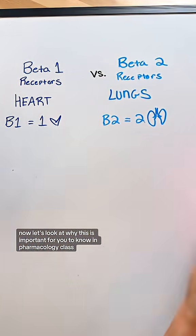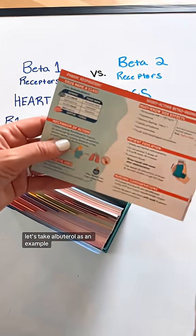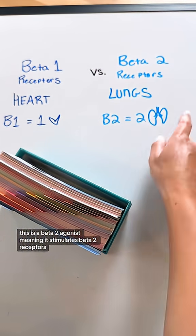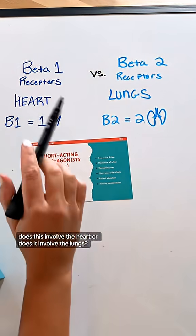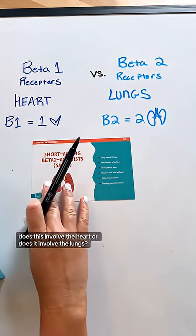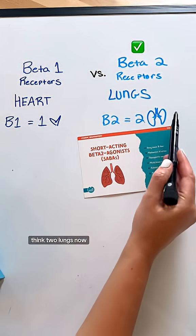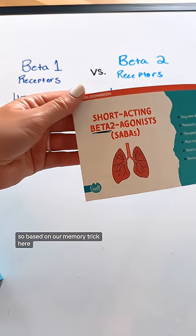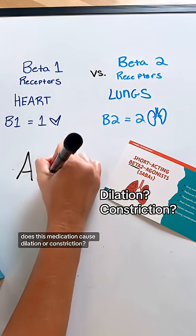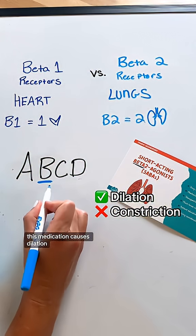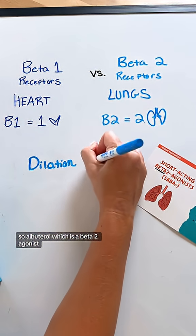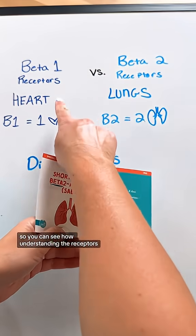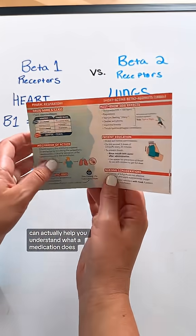Now let's look at why this is important for you to know in pharmacology class. Let's take albuterol as an example. This is a beta 2 agonist, meaning it stimulates beta 2 receptors. Looking back at our memory trick, does this involve the heart or the lungs? This involves the lungs — remember, beta 2, think two lungs. Now this is a beta receptor, not an alpha, so does this medication cause dilation or constriction? This medication causes dilation. So albuterol, which is a beta 2 agonist, causes dilation of the lungs, also called bronchodilation. You can see how understanding the receptors can actually help you understand what a medication does.